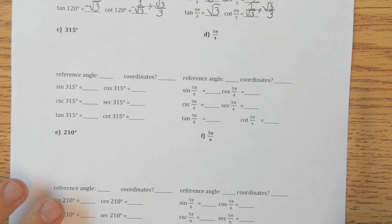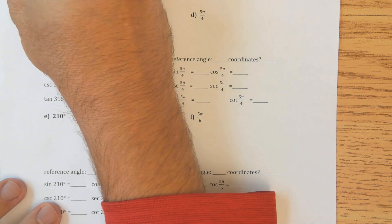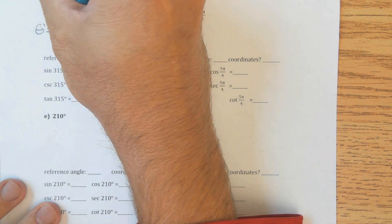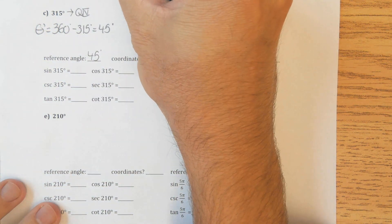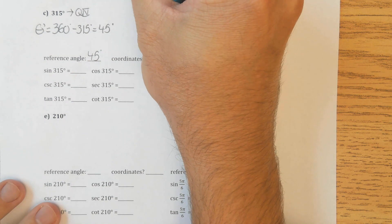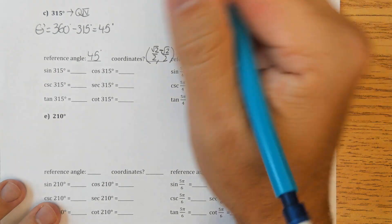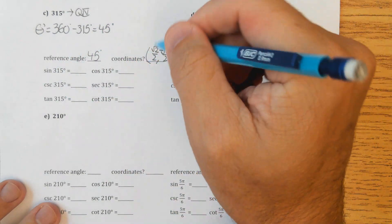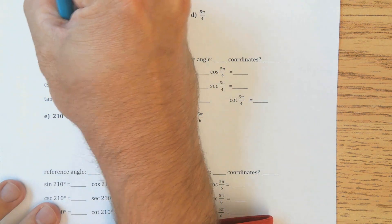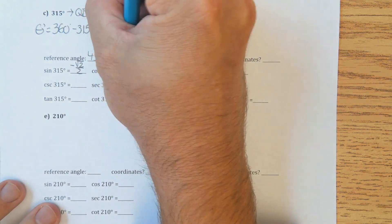Moving on to 315 degrees — what quadrant is that in? 315 degrees is in quadrant 4. Our reference angle rule for quadrant 4 is 360 degrees minus the angle given, so that's 45 degrees. The 45-degree family has coordinates (root 2 over 2, root 2 over 2). Since I'm in quadrant 4, I need to make the y value negative — positive x, negative y.